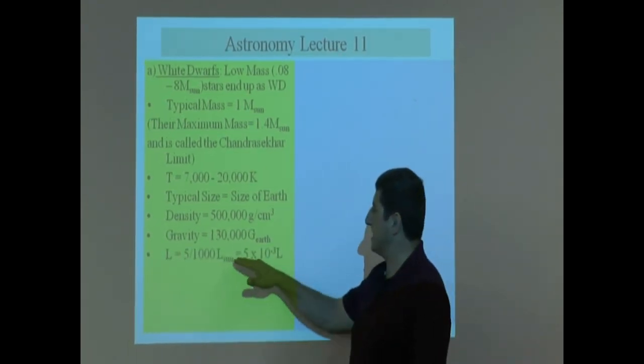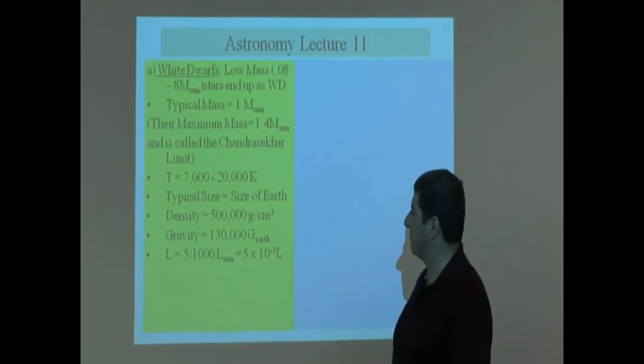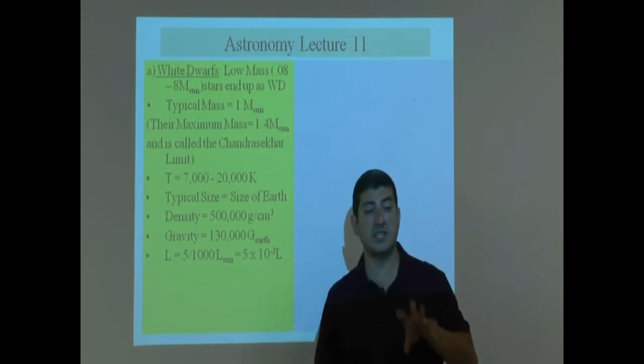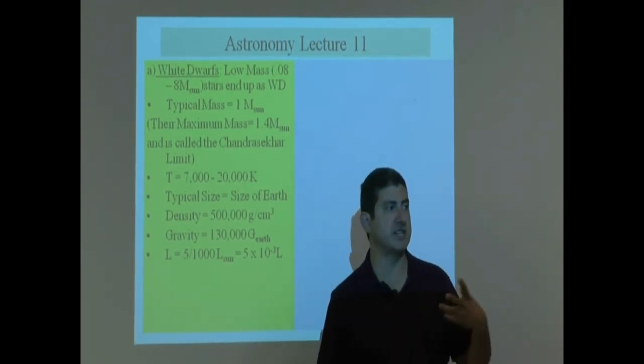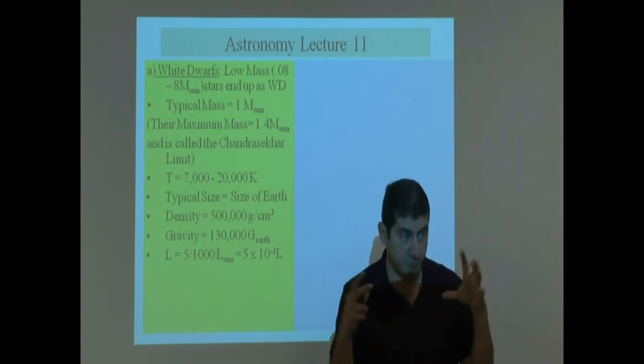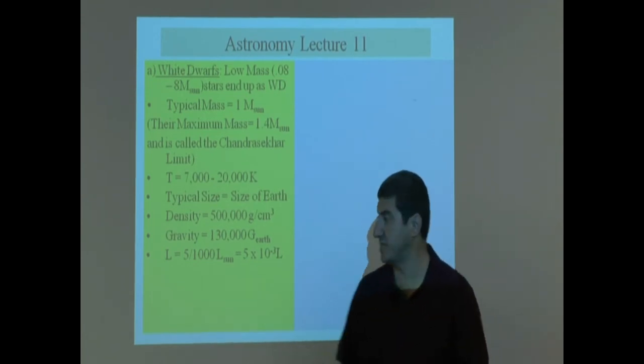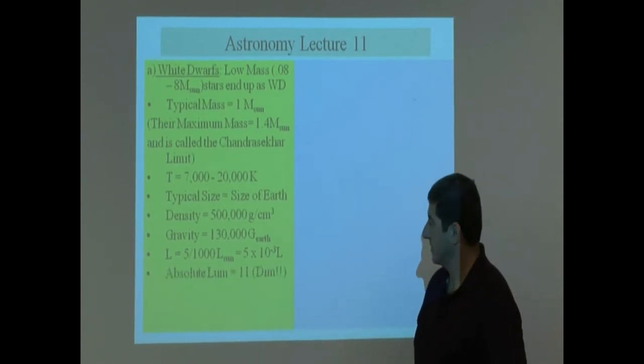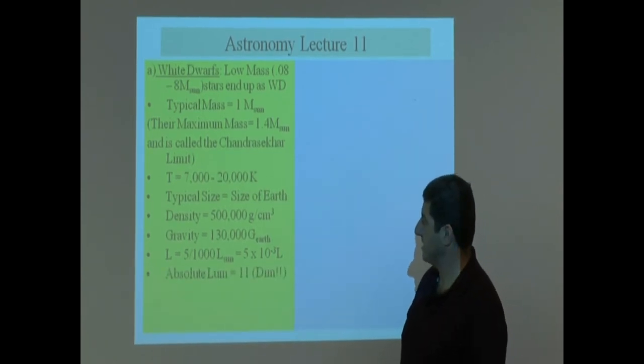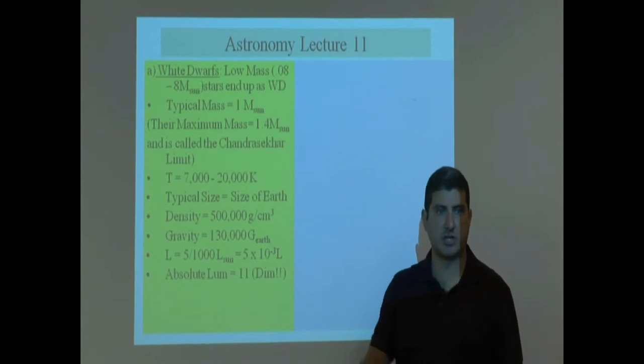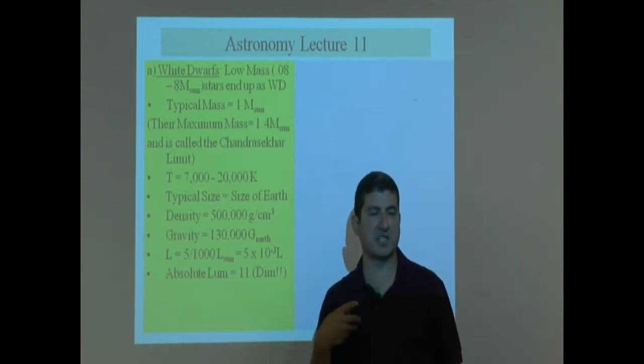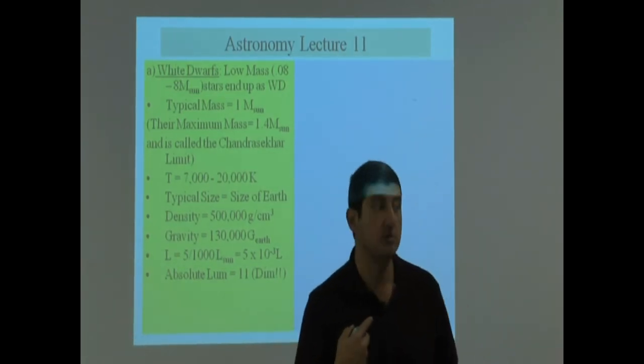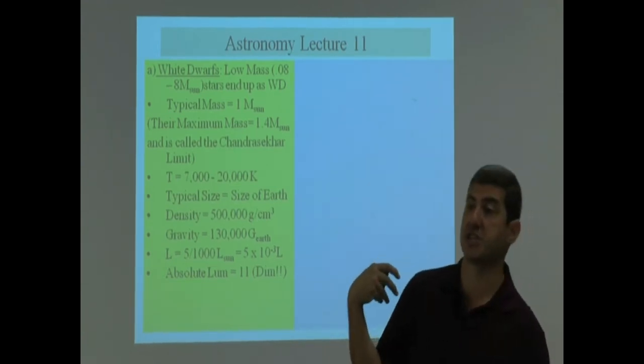And roughly the luminosity is five times ten to the minus three times the luminosity of the sun. So the reason that they are so dim is because they're small. They don't have a lot of luminosity, but they are hotter than the sun. Absolute luminosity is 11, so they're dimmer than the sun. Remember the sun was 4.83. Their luminosity on the Hipparchus scale is larger.